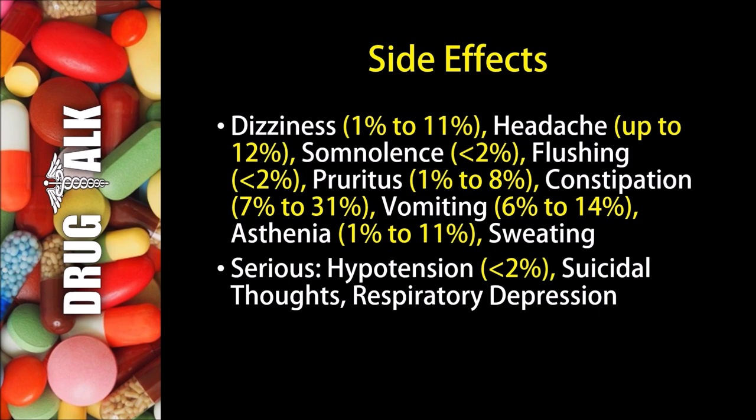Vomiting may occur 6-14% of the time, and asthenia, or abnormal weakness, may happen 1-11% of the time. Sweating is also a possibility. Now, some more serious but rare side effects would be hypotension, or a drop in blood pressure, that would happen less than 2% of the time, as well as suicidal thoughts or respiratory depression.